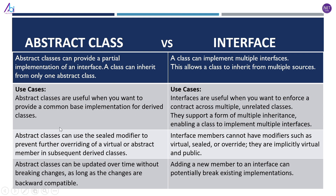Abstract classes can use the sealed modifier to prevent further overriding of a virtual or abstract member in subsequent derived classes. Interface members, on the other hand, cannot have modifiers such as virtual, sealed, or override — they are implicitly virtual and public.